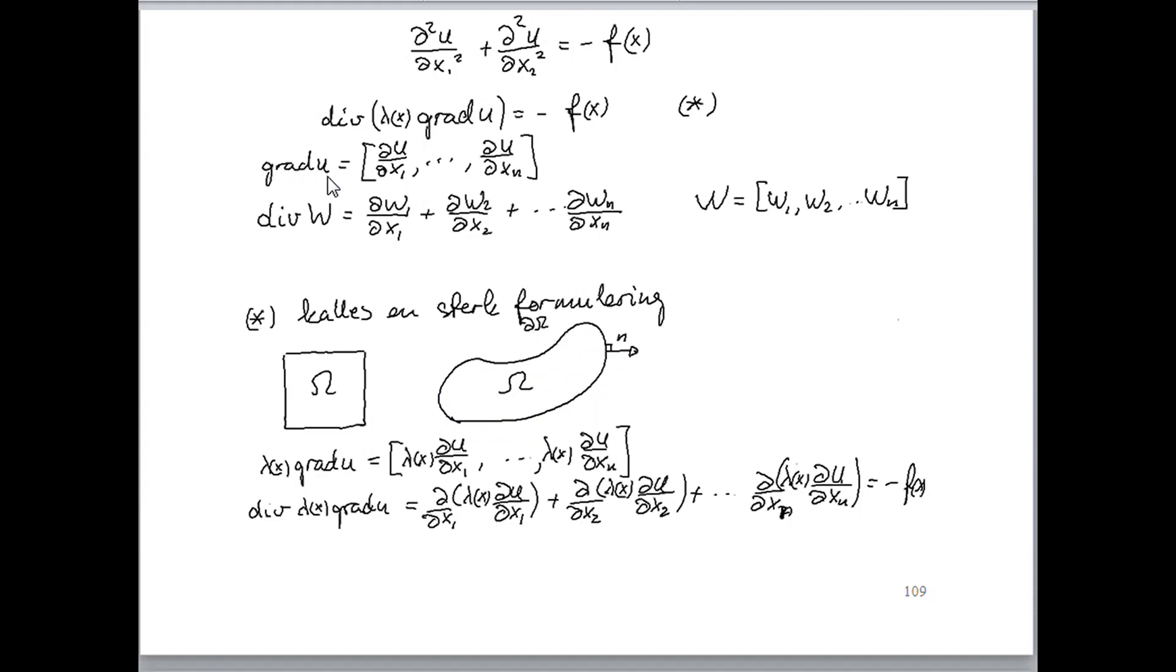We recall that the gradient of the scalar function u is a vector function which has the following components. In the first component, we have the partial derivative of u with respect to the first variable x_1. The second component is the partial derivative of u with respect to the second component, and so on.